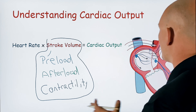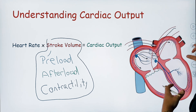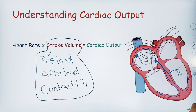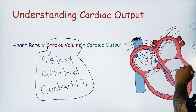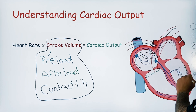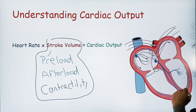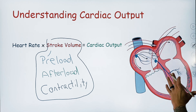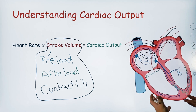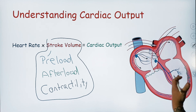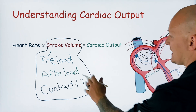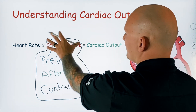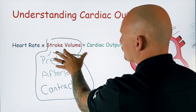Contractility is all about the ability to squeeze. For example, if you have an MI — a myocardial infarction — and you have an infarcted vessel or infarcted muscle tissue, that muscle tissue can no longer contract nearly as well as it used to. So that could create a decreased contractility. These three things — preload, afterload, and contractility — comprise your stroke volume.